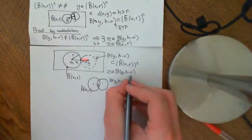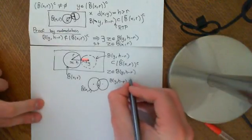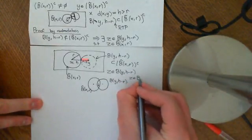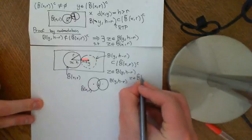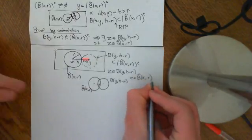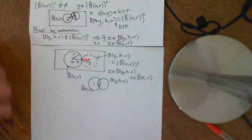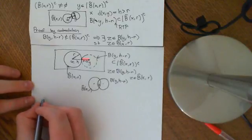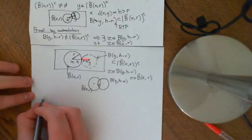We've got some Z which is an element of that open ball, and Z is also an element of the closed ball around X of radius R. What we can do is show that this violates the triangle inequality.